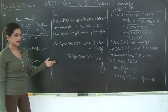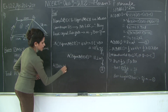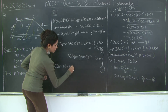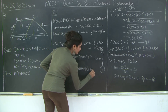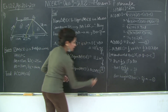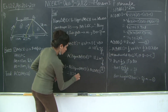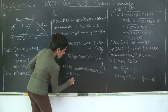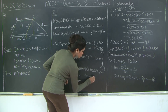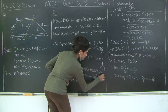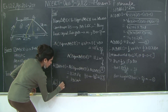Therefore the area of trapezium ABCD equals the area of parallelogram ABED plus the area of triangle BEC, which is 112 plus 84 equals 196 square meters. This follows from equations (1) and (2).